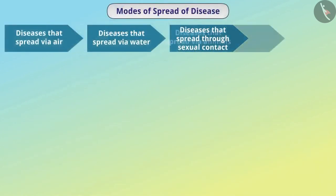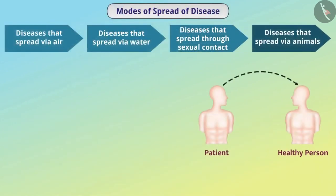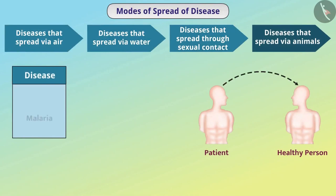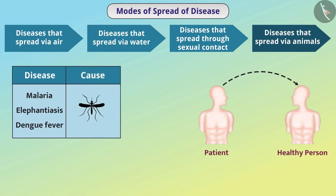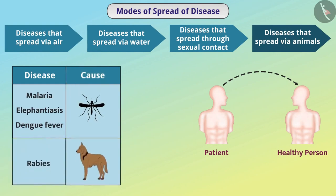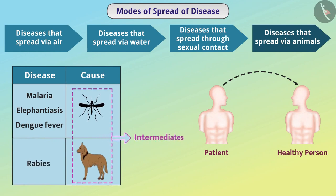Some diseases are spread through other animals. For example, malaria, elephantiasis, and dengue fever spread through mosquito bites, and rabies spreads through dog bites. These animals act as intermediates and are called vectors.